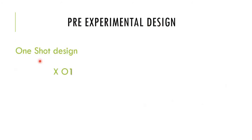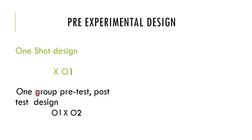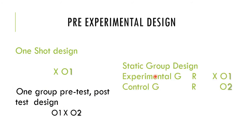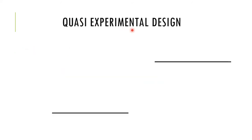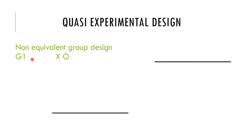In pre-experimental design: One-shot design — treatment is applied to one group and then tested. One group pre-test post-test design — one group with no control group; pre-test, treatment, then post-test comparison. Static group design — experimental group and control group both without pre-test; treatment is applied to experimental group, then both groups are tested.